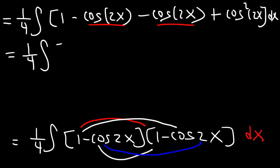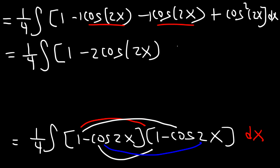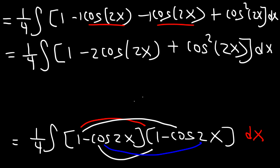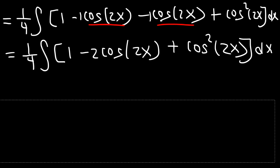Let's combine the two like terms. We get one fourth times the integral of 1, and negative 1 minus 1 is negative 2, so this is negative 2 cosine 2x, plus cosine squared 2x. Now we need to use the power reducing formula one more time.